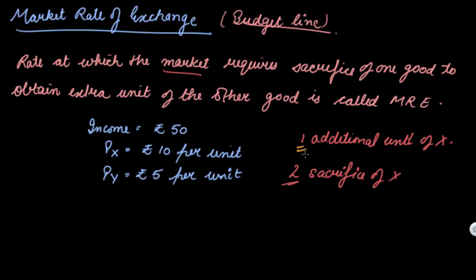Because X costs rupees 10 and Y costs rupees 5, in order to have an additional 10 rupees, you have to sacrifice two Y's—that is, 5 plus 5 equals 10. So this is your marginal rate of exchange.